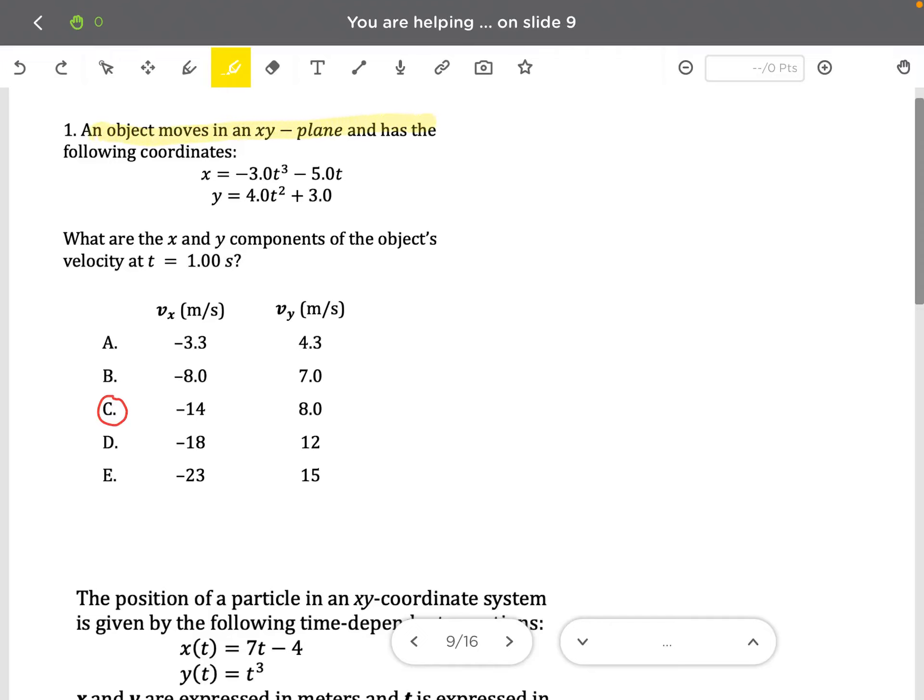An object moves in an xy plane and has the following coordinates. This is the x coordinate and this is the y coordinate. So these are the x and y position of the object. What are the x and y components